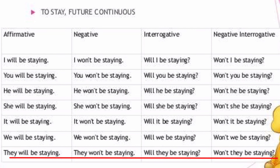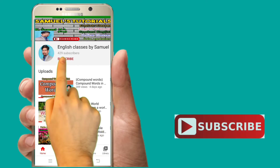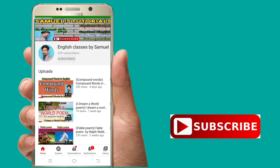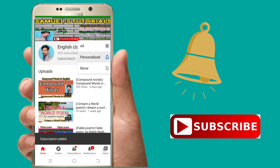This is a chart for using the future continuous tense in affirmative, negative, interrogative, and negative interrogative forms. Hope you understood the structure and usage of the future continuous tense. If you like this video, please subscribe to our channel to get further updates. Thanks for watching. We will see you soon.